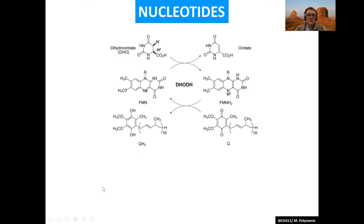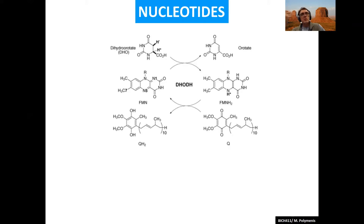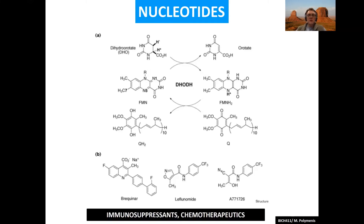If you block this enzyme — dihydroorotate dehydrogenase — you can block the synthesis of pyrimidines. Therefore, you block the ability of cells to make these building blocks for nucleic acids, preventing them from proliferating. Sure enough, certain compounds will do exactly this and block this enzyme. They are chemotherapeutics.